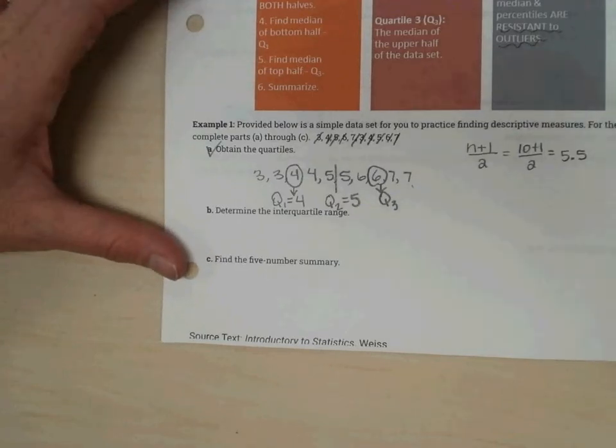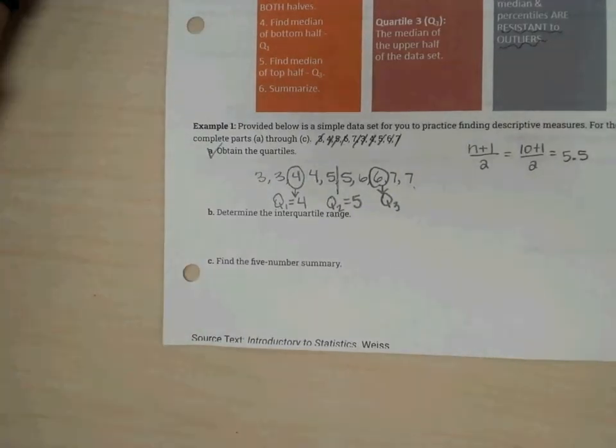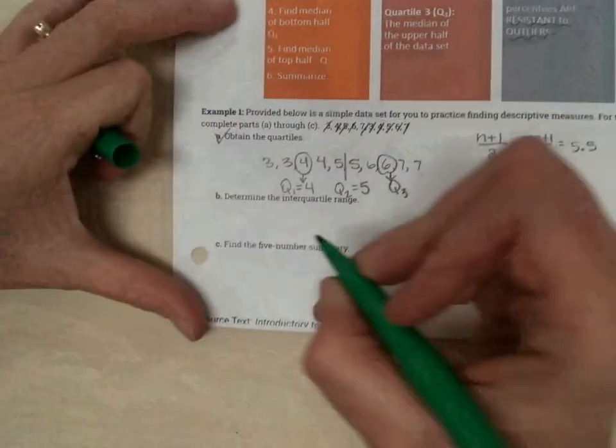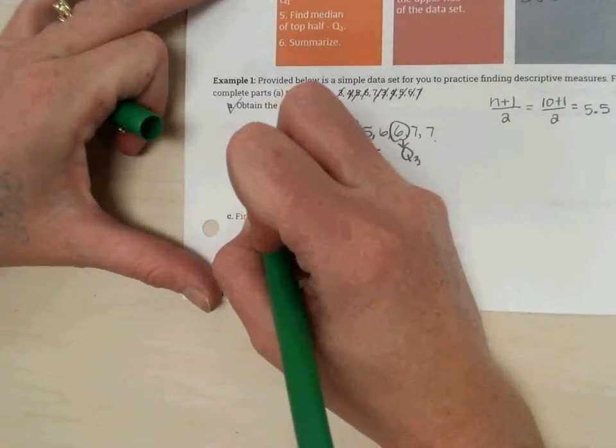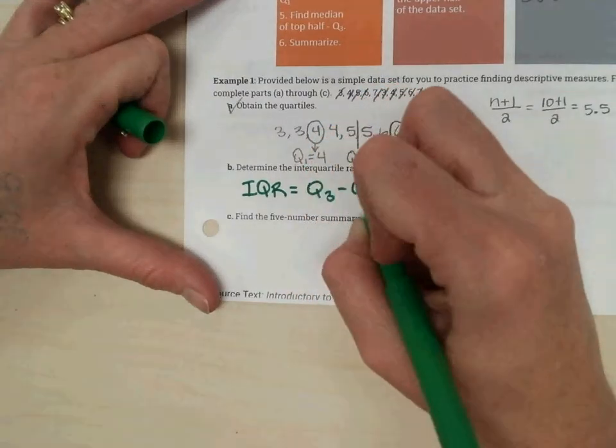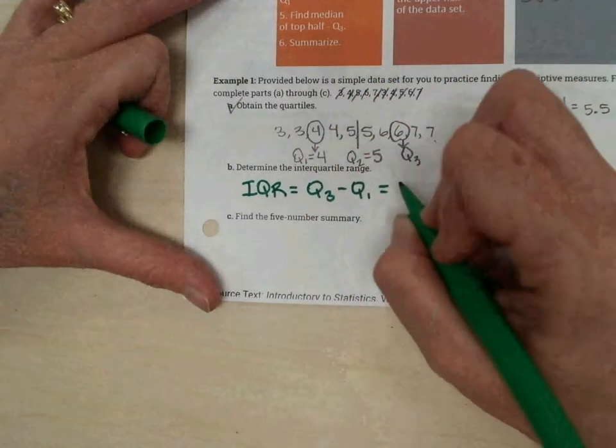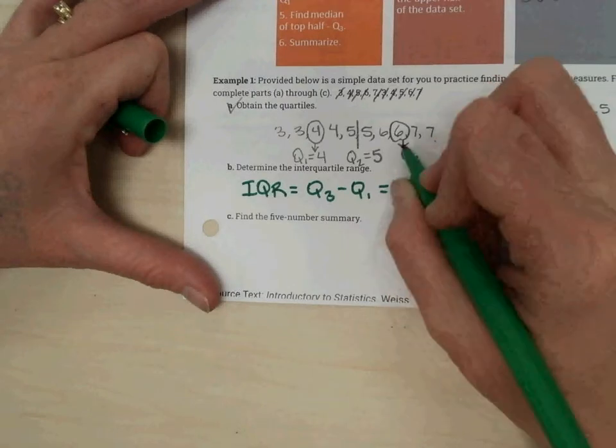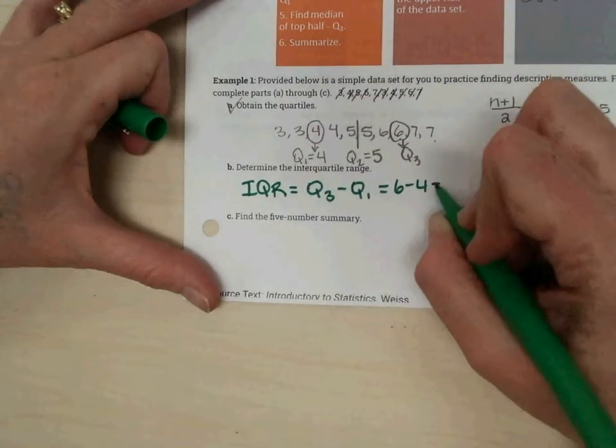Second, it says determine the interquartile range. The interquartile range is abbreviated IQR, and it's just the Q3 minus the Q1. In this case, six minus four, which is two.